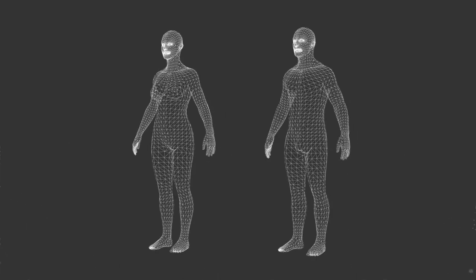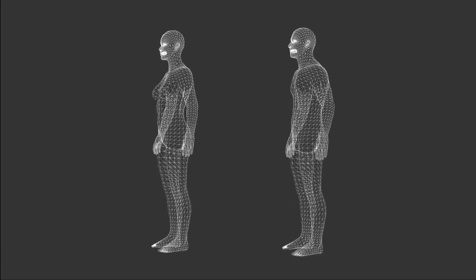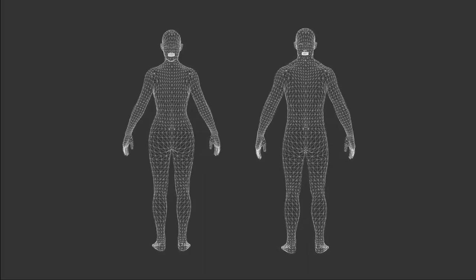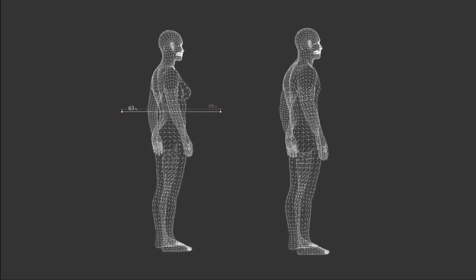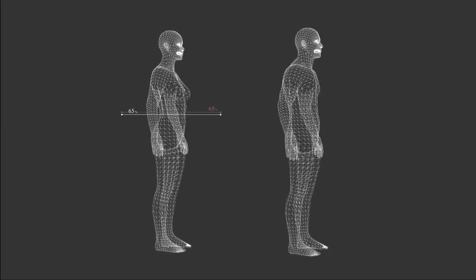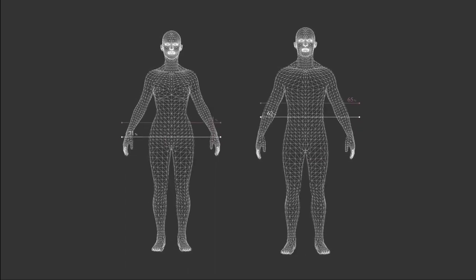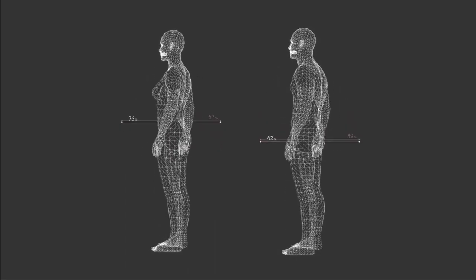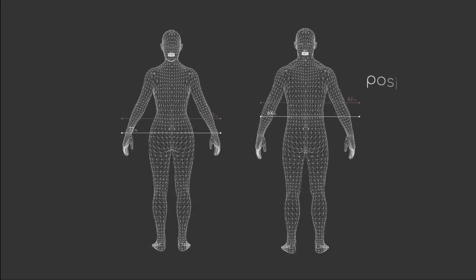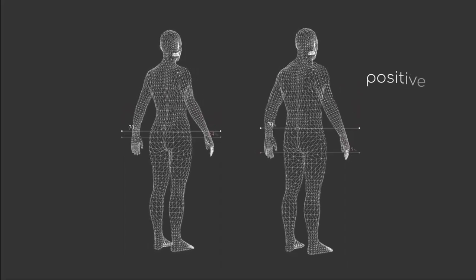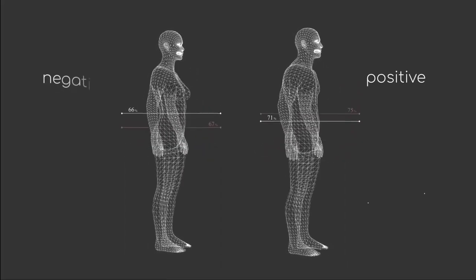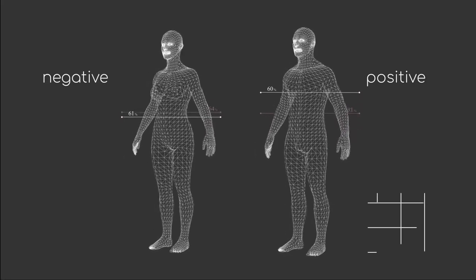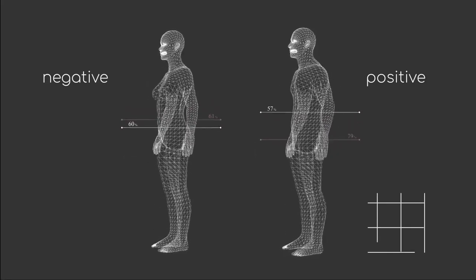Let's consider a simple example where we want to classify whether a patient has a certain disease or not. As with any other classification task, our dataset of patients consists of people that actually have the disease and people that do not. The people diagnosed with the disease will be called positive and the ones which are not diagnosed are called negative. Together, positive and negative samples form our complete dataset and build our ground truth.